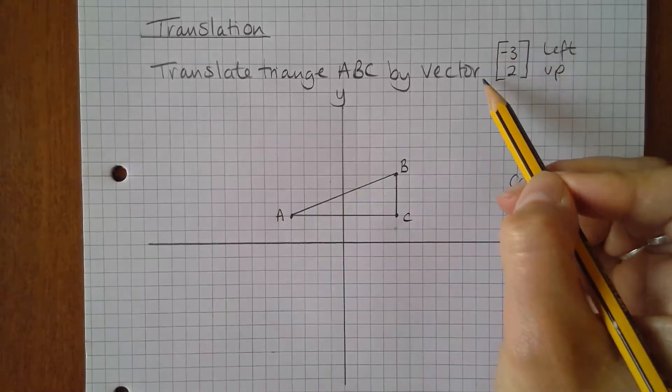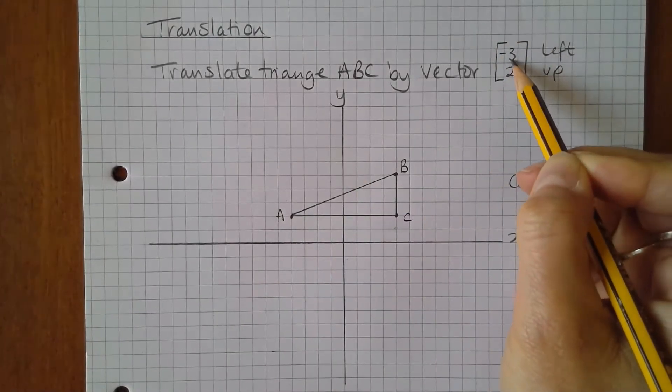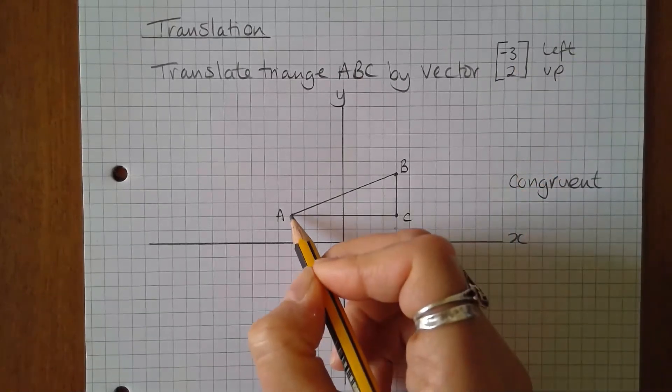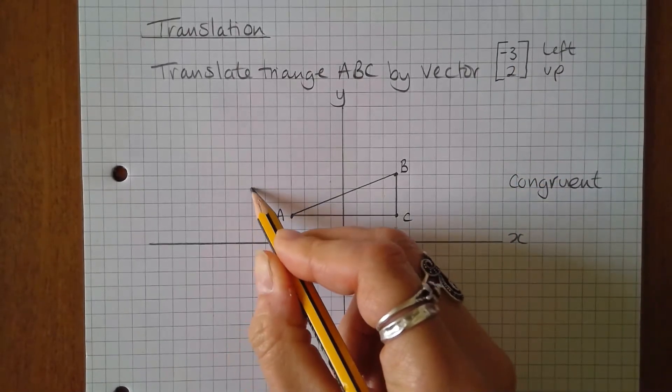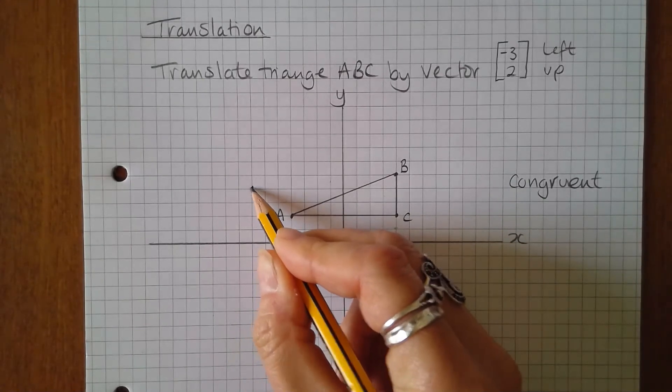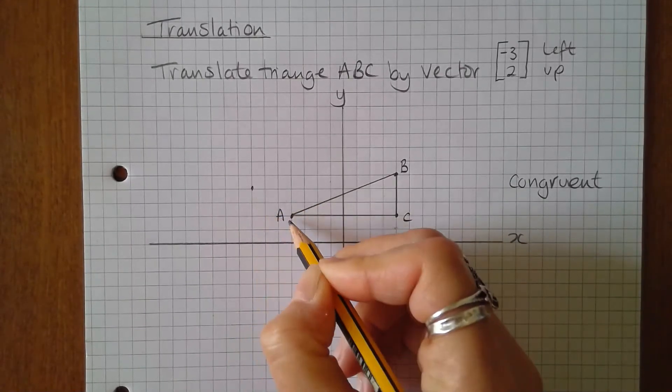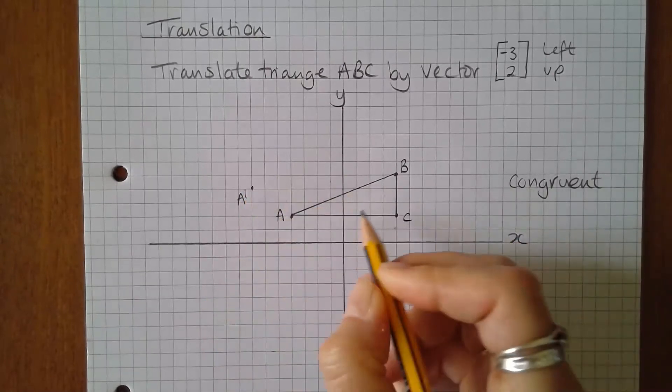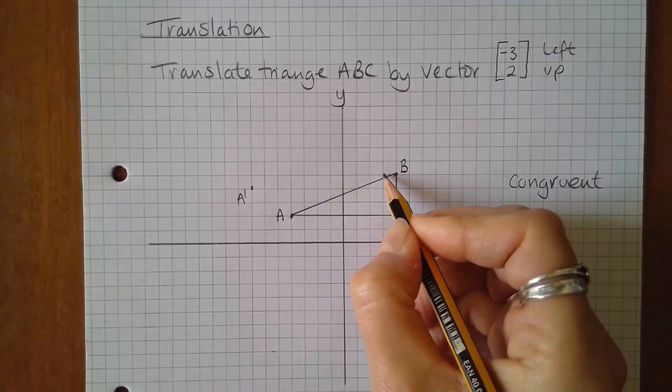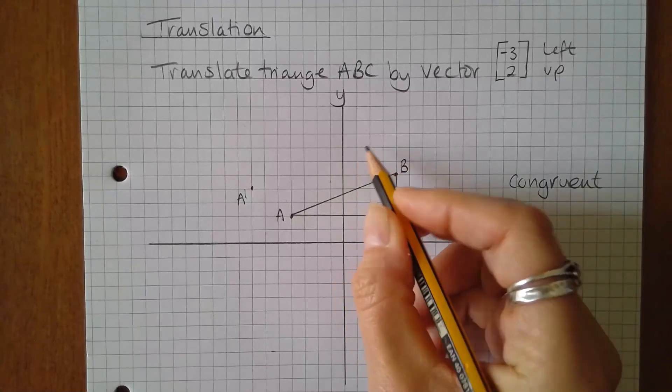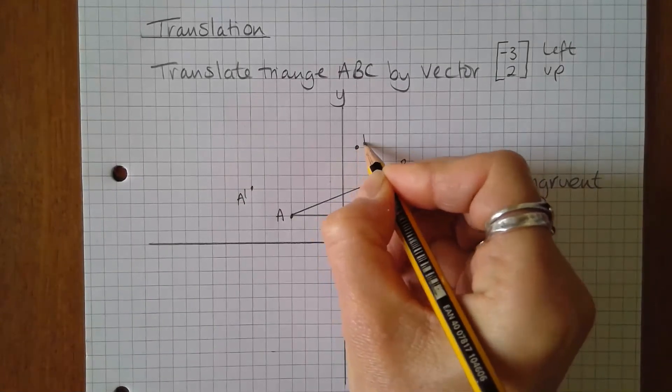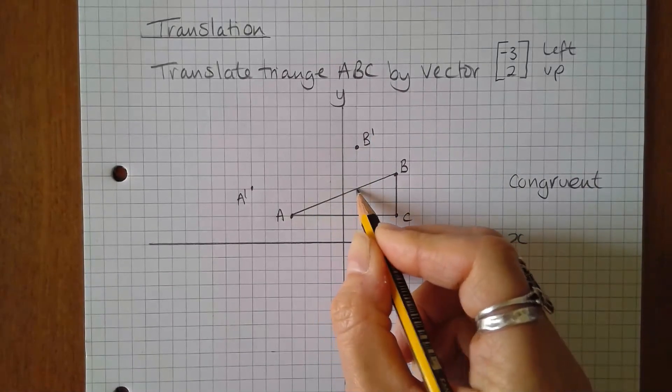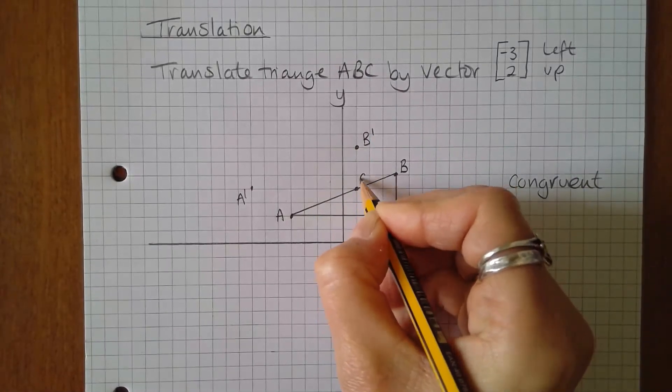So each vertex has to move negative three two or three units to the left and two units up. So negative three two and this vertex is the new A so we call this A dash. B negative three two B dash and C negative three two C dash.